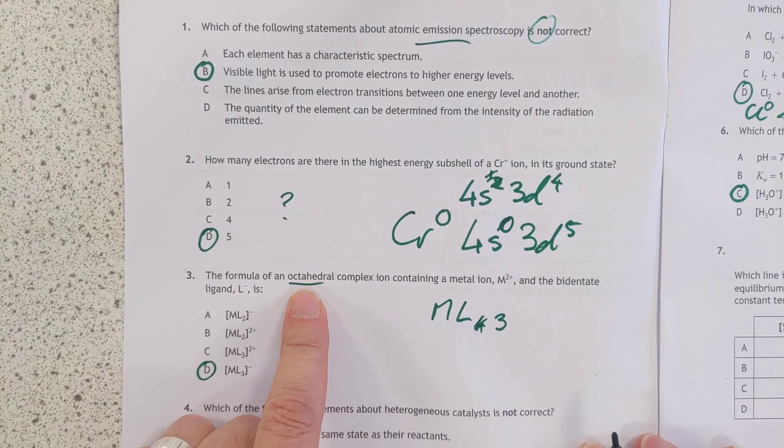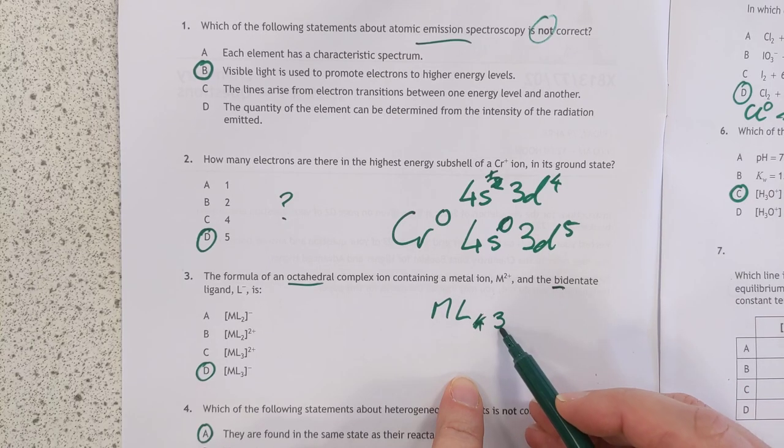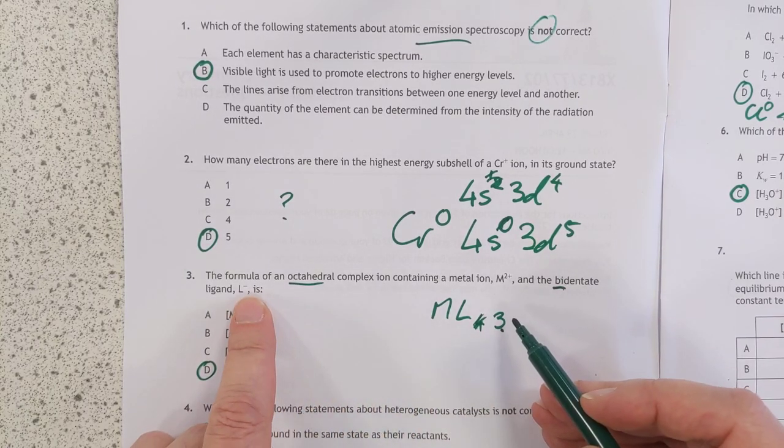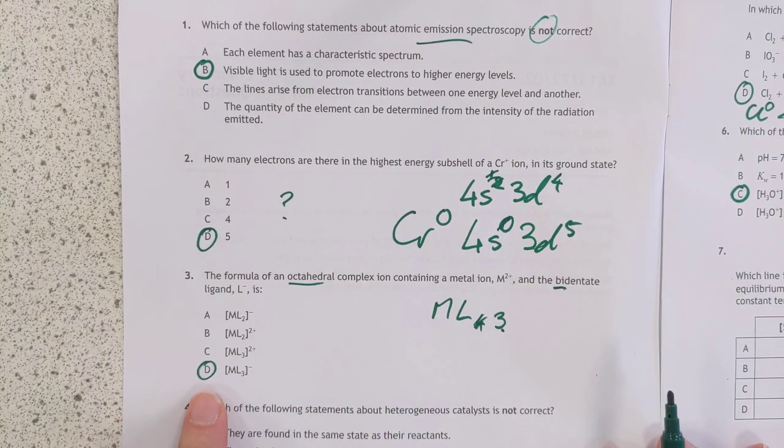If you have an octahedral complex, that means there's 6 points. Each ligand attaches to 2 points, so that means you need 3 of the ligands. The charge is 1 minus for each ligand, and the charge of them is 2 plus. It's D, basically.